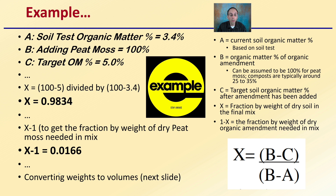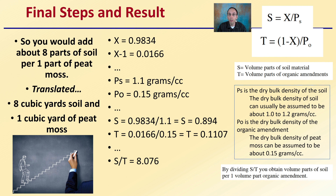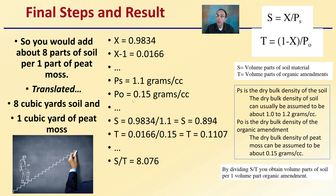We want to convert these weights to volumes, since that's typically how we think and purchase materials. Carrying over the same numbers — our X and 1 minus X — PS is 1.1 grams per cc for the bulk density of the soil, and PO is 0.15 grams per cc for peat moss. Applying these to the equation, we get our S and T values. Dividing S by T gives us 8.076.